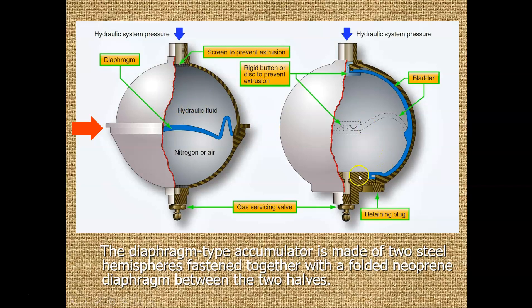This picture on the right is when the airplane is shut off, this diaphragm will flex, and when the airplane's turned off, it will push all the way up. It will push the fluid out when the hydraulic system is shut down. So this is made of two steel hemispheres fastened together with a folded neoprene diaphragm between these two halves.